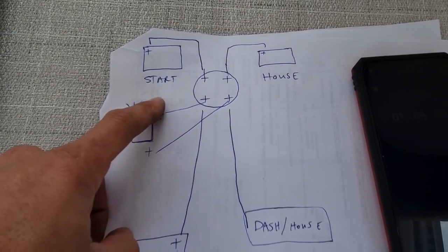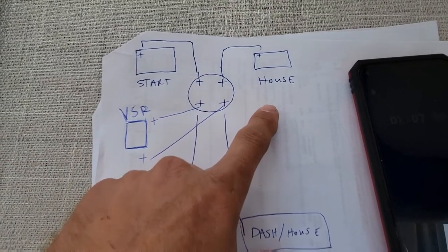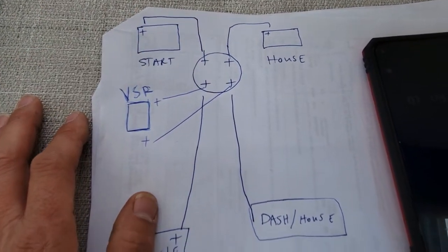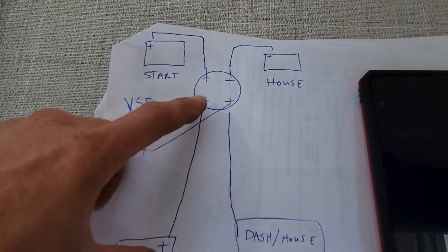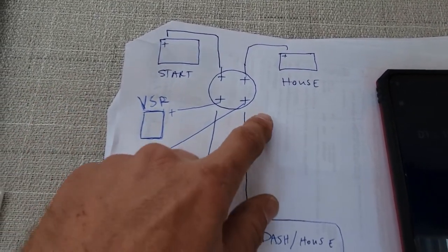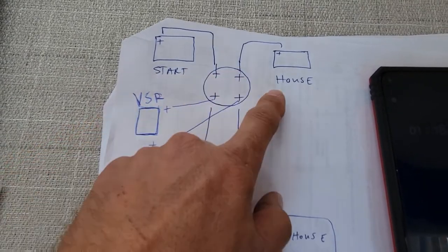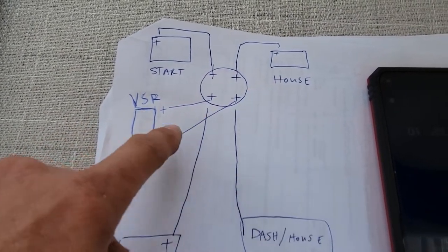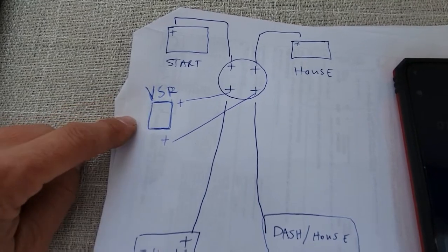It's isolated. That way, when you go to start the engine, you don't pull from your house side and shut your electronics off because you've got a big voltage draw under nine volts or something. It's a good smart way to do it. And then, because unless you combine them when you're running, this battery will not charge. So, that's why they add the VSR, which is a voltage sensing relay.